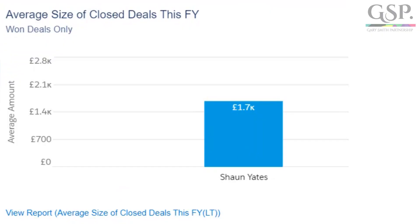For example, we don't know if Sean's win rate by number is higher than his win rate by value because he's not confident handling larger deals. We don't know if he's prioritising in the wrong area, or if he's giving away too much discount. Perhaps he's not selling supplementary or add-on products and services. So we would want to combine this with other dashboard charts — his average deal size, for example — to identify the specific coaching and guidance we'd want to give to Sean.